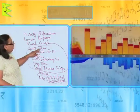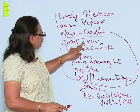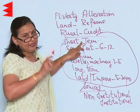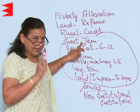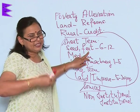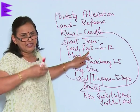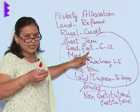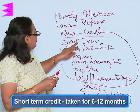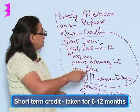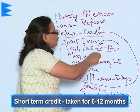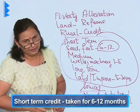The short-term credit is taken by farmers in India for buying seeds, fertilizers, and manures — small things — and this kind of credit is generally taken for 6 to 12 months.